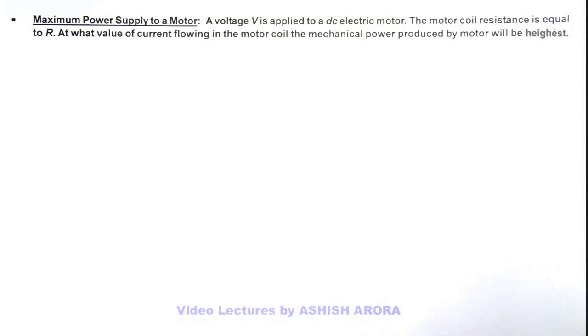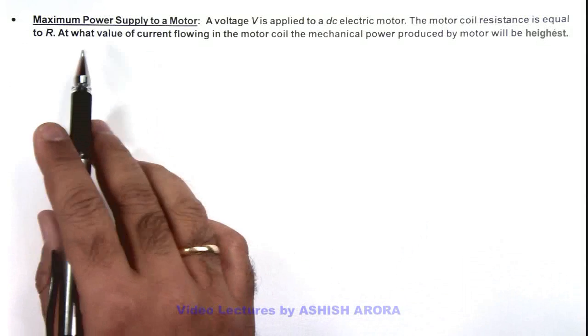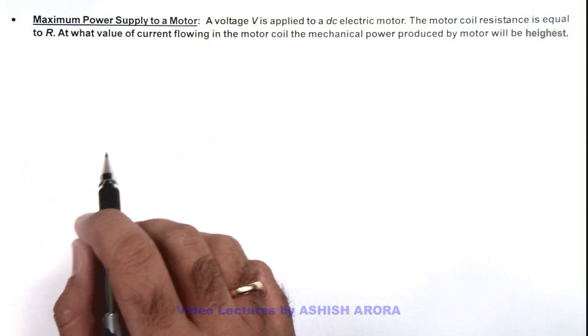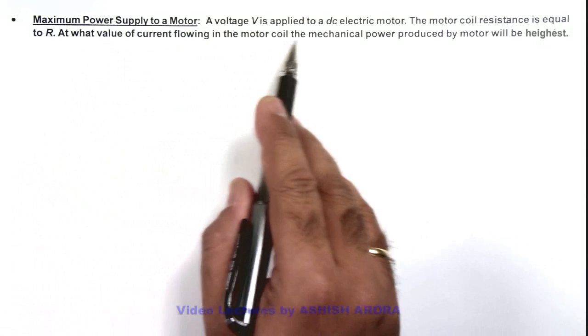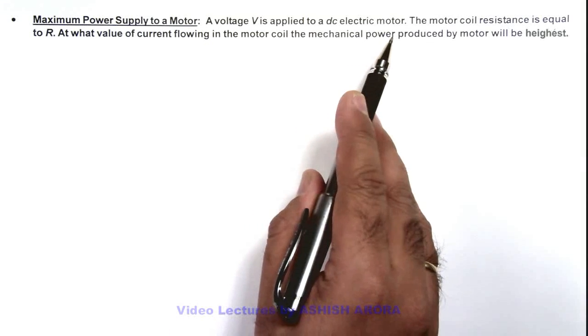In this illustration we'll study about the maximum power supply to a motor. Here the situation is stated as a voltage V is applied to a DC electric motor. The motor coil resistance is equal to R.